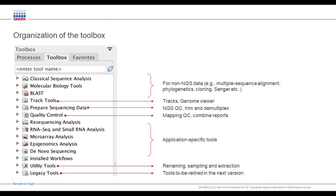Looking at the toolbox, the tools are organized by folders named by the overarching theme. The first few folders are for non-NGS data — for example, multiple sequence alignment, phylogenetics, cloning tools, Sanger sequencing, and so on. The track tools are what one could call a genome browser or genome viewer, with all the accessory tools to work with it. The prepare sequencing data folder contains QC tools for NGS, trimming tools, and demultiplexing facilities.